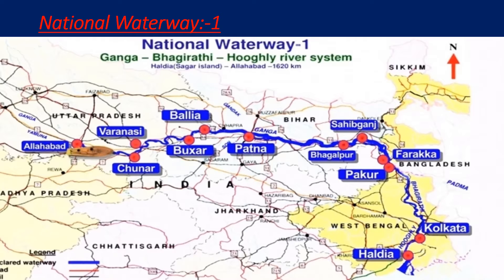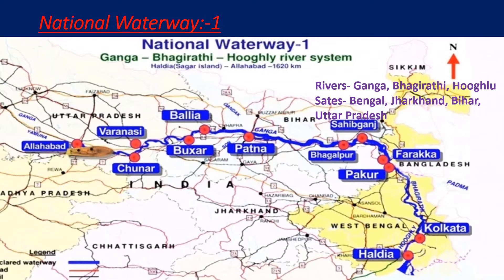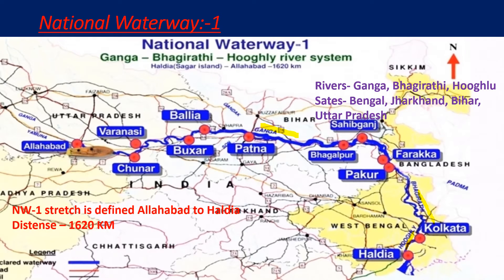National Waterway One comprises three rivers: the Ganga, Bhagirathi, and Hooghly rivers. The states covered are West Bengal, Jharkhand, Bihar, and Uttar Pradesh.